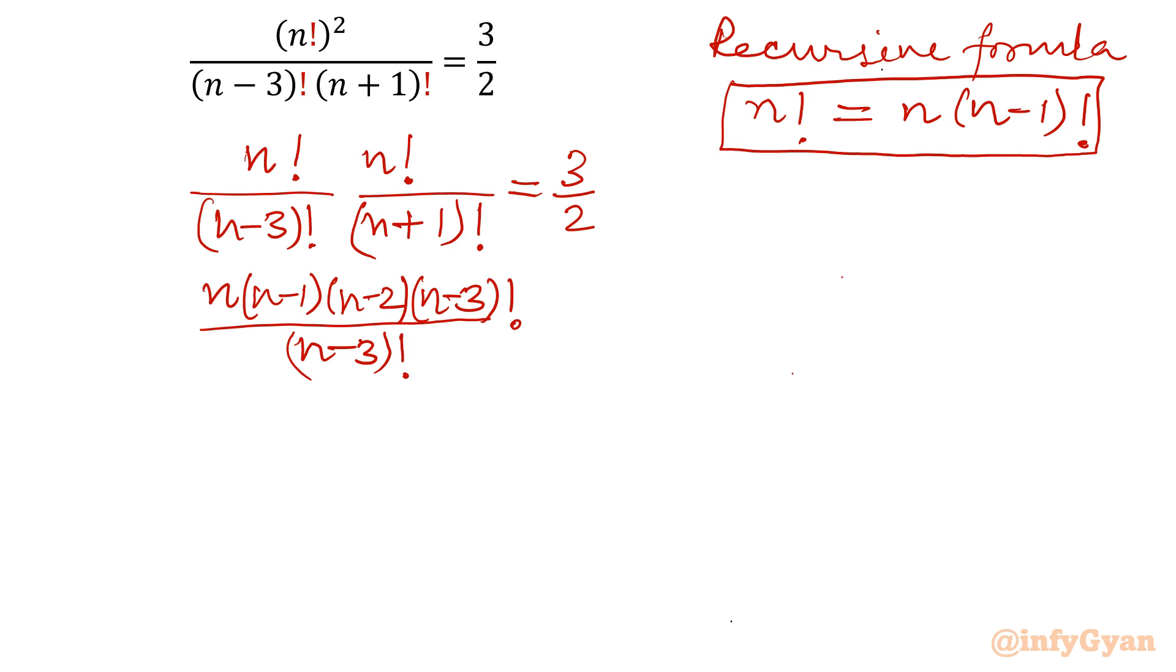Now second term, I won't touch the numerator. I will write recursive formula for denominator this time. So it will be n plus 1, one number lesser than this, so n factorial. So this will be cancelled out. Here this term will get cancelled out. Right hand side is 3 over 2.